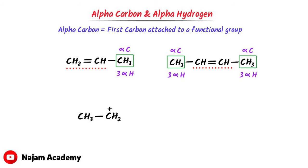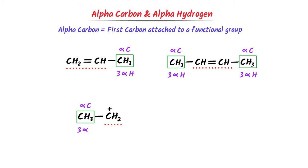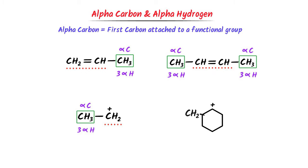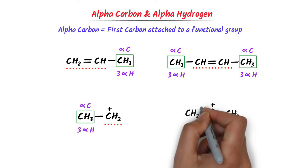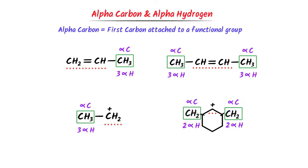Thirdly, consider this organic compound — it is a carbocation. The first carbon attached to it is the alpha carbon, and there are three alpha hydrogens in this molecule. Lastly, consider another organic compound. This is CH2 and this is also CH2. Both carbons are alpha carbons on the left-hand side and the right-hand side. Hence, there are total four alpha hydrogens present in this compound. Note down these important concepts of alpha hydrogen and alpha carbon.